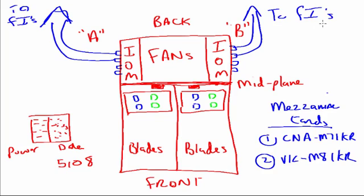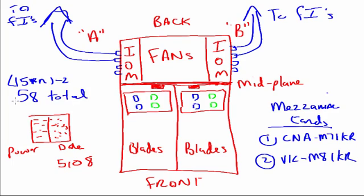If we have one IOM port connected, we'll be able to create up to 13 adapters. The formula is actually 15 times N, minus 2. So if we have 15 times 1, that's 15 minus 2 equals 13. If we have two connected, 15 times 2 is 30, minus 2 is 28. If we have all four connected, 15 times 4 is 60, minus 2 is 58. The VIC-M81KR architectural limit is 128 adapters, but the software limitation right now is 116 virtual adapters. That 116 includes not only the adapters we create — the VNICs and VHBAs — but their implied failover path as well. So we cut that in half, giving a maximum of 58 total adapters.